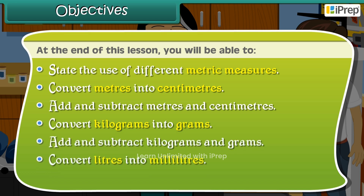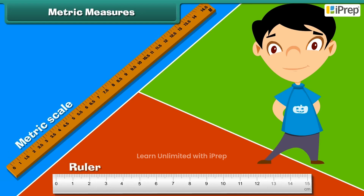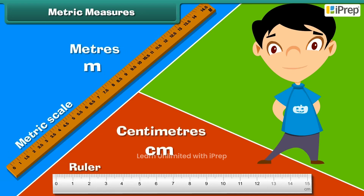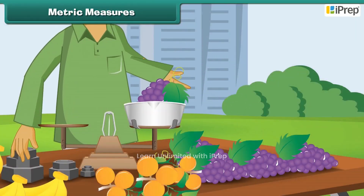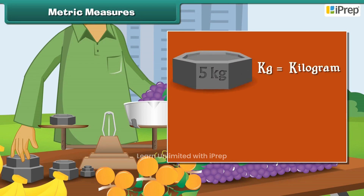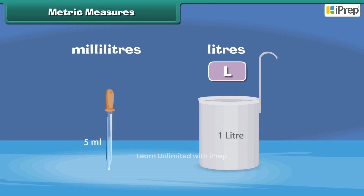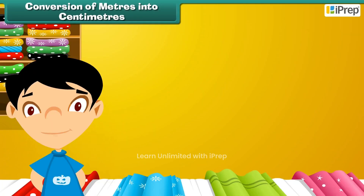Convert liters into milliliters, and add and subtract liters and milliliters. In metric measures, meter is represented by M and centimeter by CM. The weight of an object is measured in grams and kilograms — the symbol kg represents kilogram while the symbol g represents gram. Capacity is measured in liters and milliliters — L represents liter and ML represents milliliter.